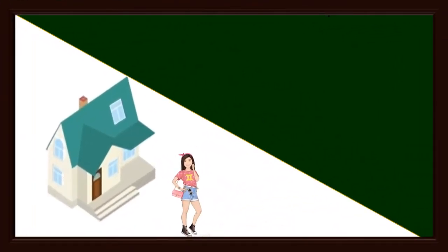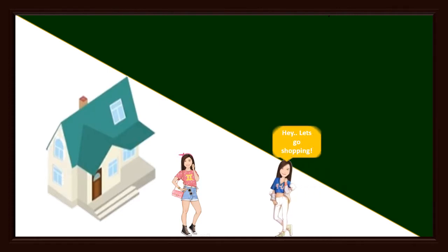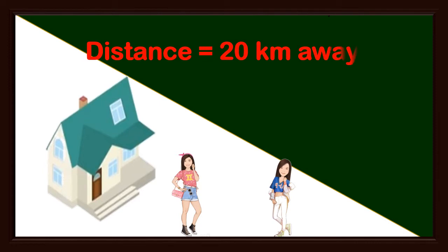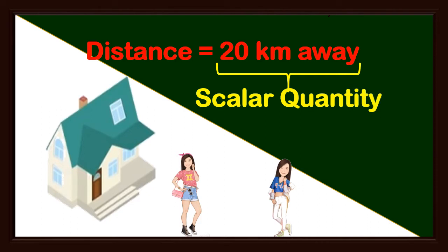Assume you're standing in front of your home. Now if your best friend comes to tell you there is a good store 20 kilometers away from home, how long will it take for you to go there? Which direction will you go? It could be here, or here, or maybe there. It is hard to know where exactly it is. You are only provided the distance, which is one-dimensional information. One-dimensional information like this is called a scalar quantity.